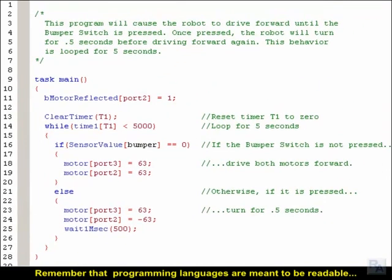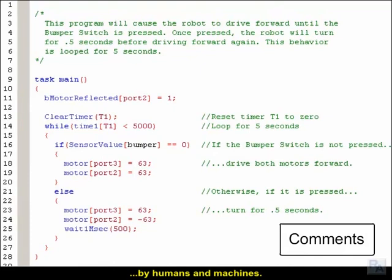Remember that programming languages are meant to be readable by both humans and machines. Sometimes, the programmer needs to leave a note for human readers to help understand what the code is doing. For this, Robot C allows comments to be made.